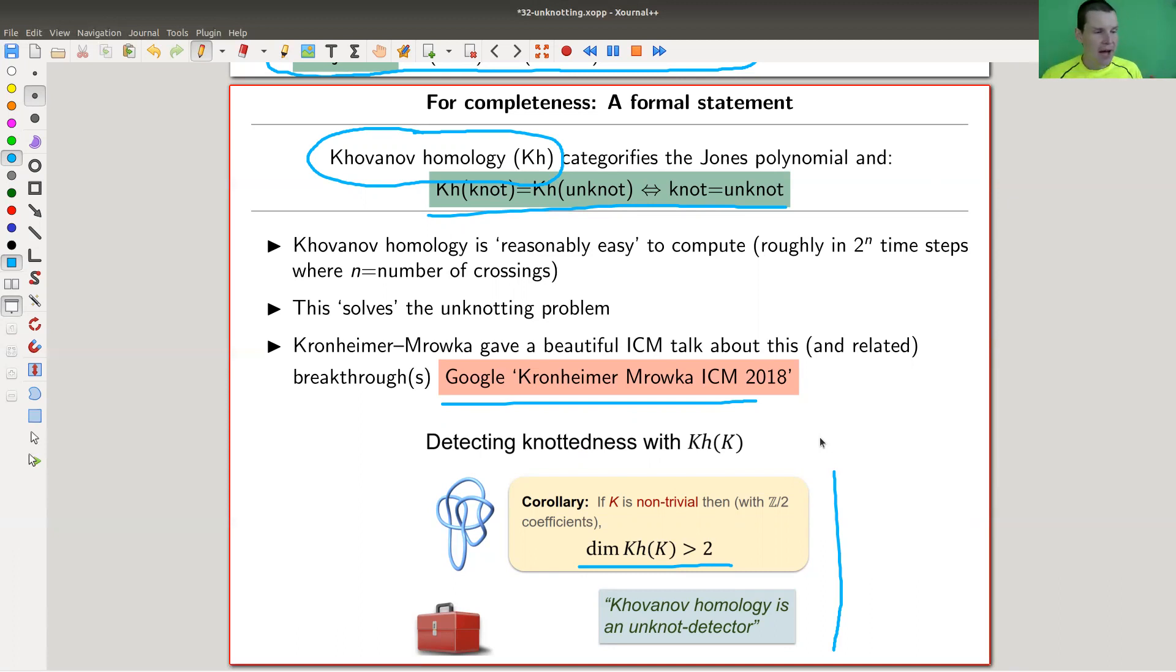People jumped on this, and then showed Khovanov homology detects a trefoil, so you can also decide whether or not it's a trefoil. There are some other families of knots where you can do this, which is ridiculous, because Khovanov homology is, in the end, a computable invariant. Really beautiful.